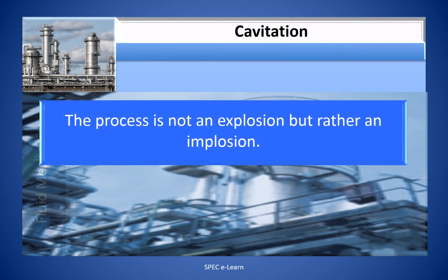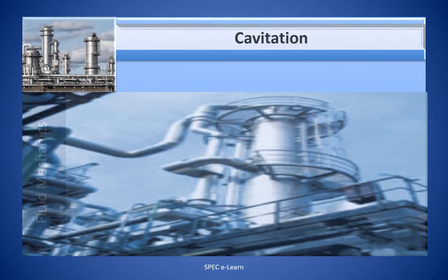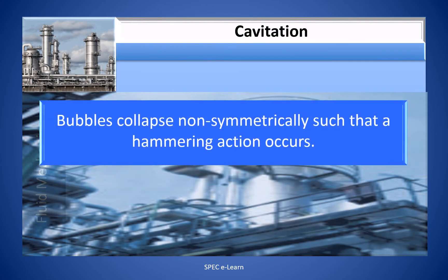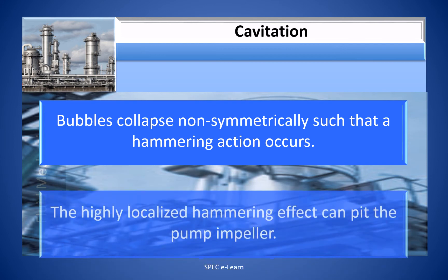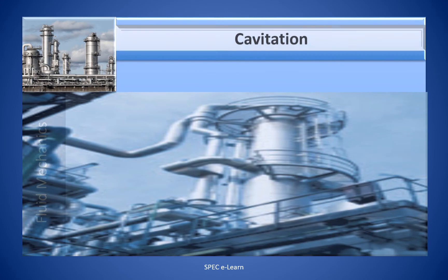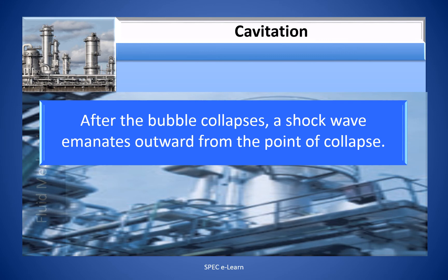The process is not an explosion but rather an implosion. Hundreds of bubbles collapse at approximately the same point on each impeller vane. The bubbles collapse non-symmetrically such that a hammering action occurs. The highly localized hammering effect can pit the pump impeller. After the bubble collapses, a shock wave emanates outward from the point of collapse. This kind of cavitation is known as NPSH available insufficiency.